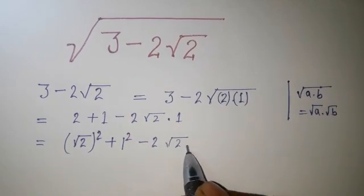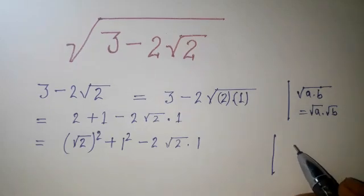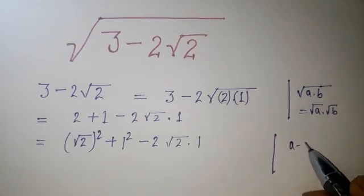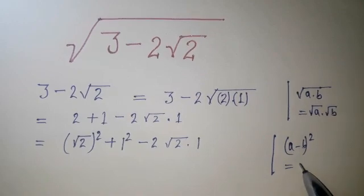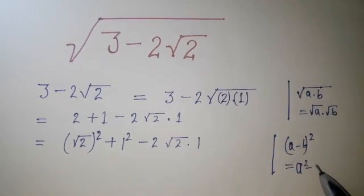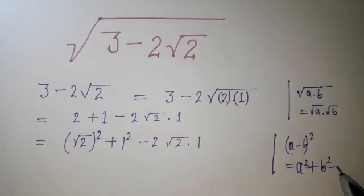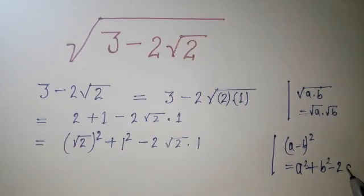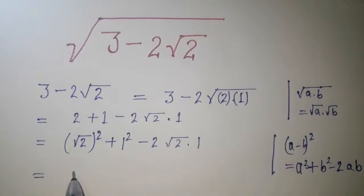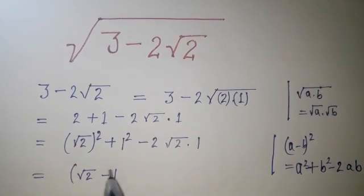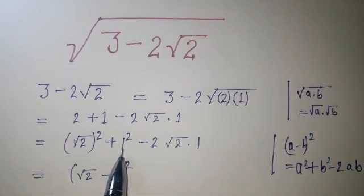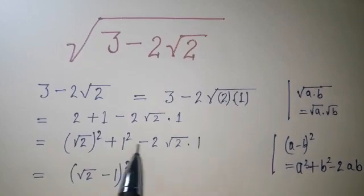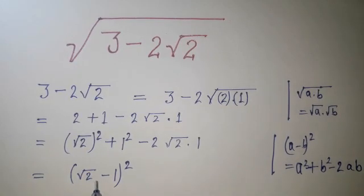And we have this formula: a minus b whole square is equal to a squared plus b squared minus 2ab. I'm going to use this here. So root 2 minus 1 whole square—this is like a squared plus b squared minus 2ab. So it becomes root under 2 minus 1 whole square.